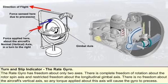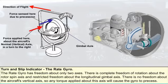The turn indicator employs a rate gyro which, having only one gimbal, has freedom about only two axes. There is complete freedom of rotation about the rotor spin axis, which in level flight lies athwartships. There is restricted freedom about the longitudinal gimbal axis. There is no freedom about the aircraft's vertical axis, so any torque applied about this axis — as in a turn — will cause the gyro to precess.